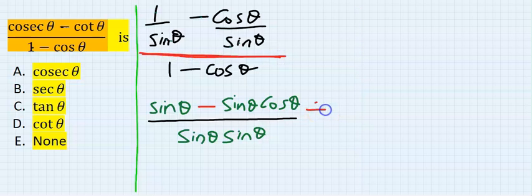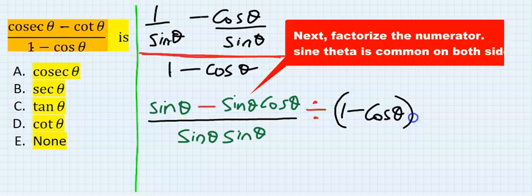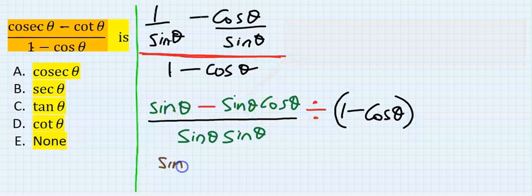Divide by, so I'm going to write it this way, by everything down here. So it's 1 minus cos theta. What is common on both sides is sine theta and bracket. This is 1 minus, what is remaining here now is cos theta.